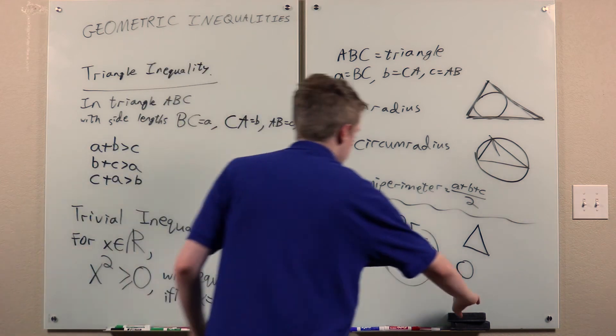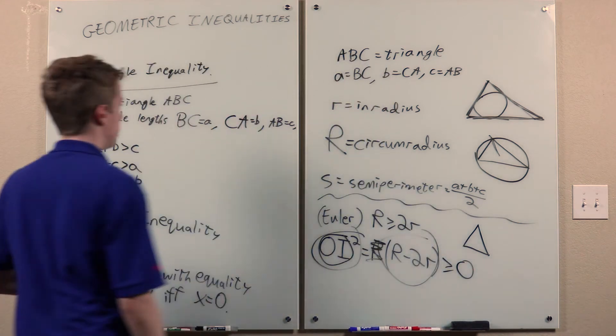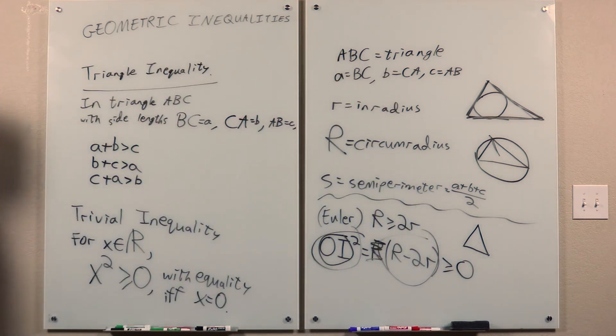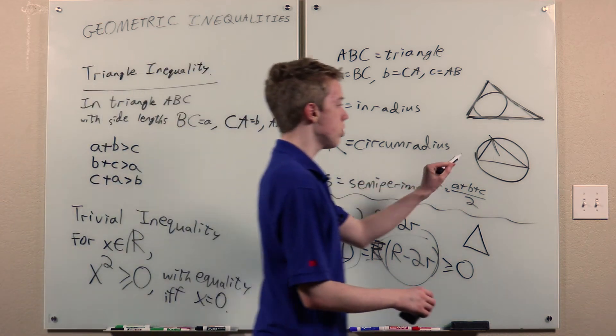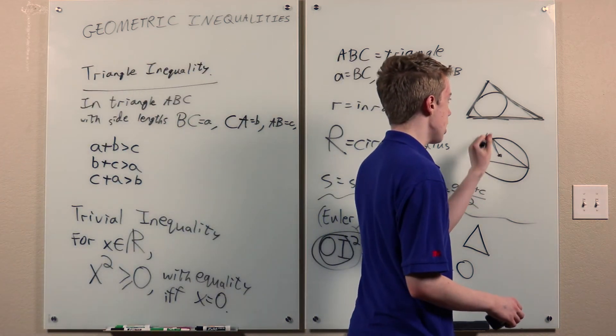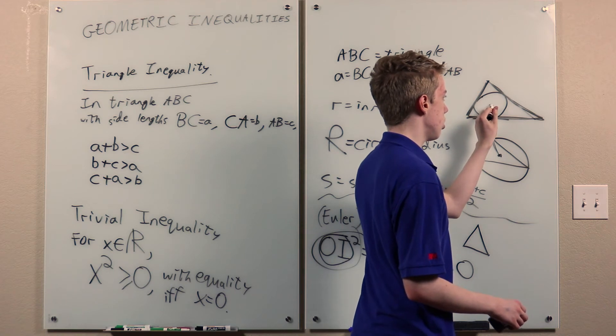So, I'll take a moment to actually prove this statement that OI squared equals R times R minus 2r. And in this, O is the circumcenter, the center of the circumcircle. And I is the incenter, the center of the incircle.